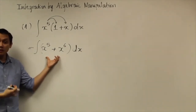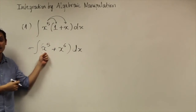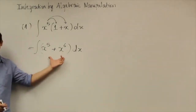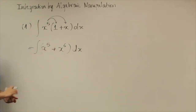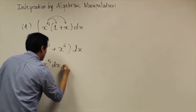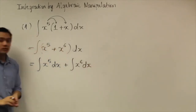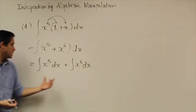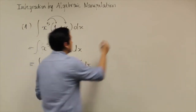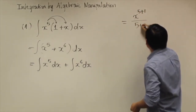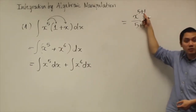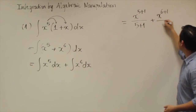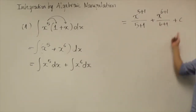Now when you look at this integral, you see something very familiar. You can find the anti-derivative of x to the fifth power and the anti-derivative of x to the sixth power separately. So from this integral, you can write it as two different integrals. For each one, you use the power rule. The power rule gives you x to the fifth plus 1 divided by 5 plus 1, and similarly x to the sixth plus 1 divided by 6 plus 1, plus the constant C at the end. Don't forget plus constant C at the end.